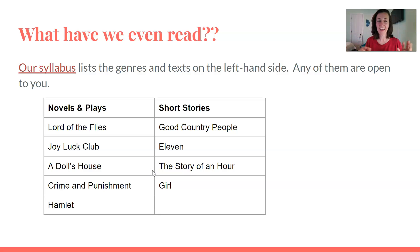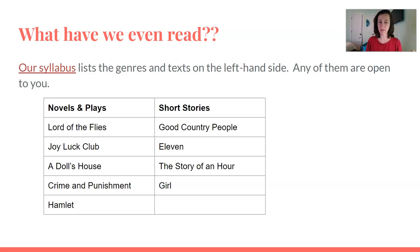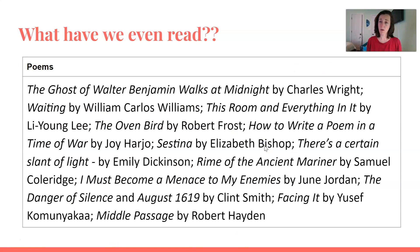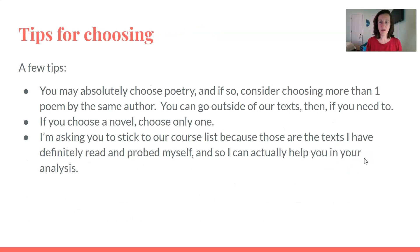How can you decide what to write about? You might immediately know — okay, I'm doing The Joy Luck Club. But if not, go through our syllabus and remind yourself of what we've read. I've got a list here: our novels and plays, our short stories, and a list of our poems. As you pick the one, know that if it's poetry you can absolutely choose more than one poem — in that case, make sure it's the same author.